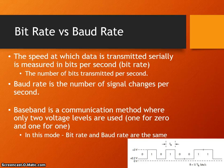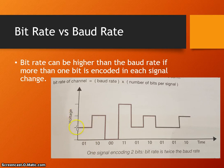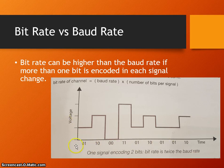There can be a situation when bit rate and baud rate are different. Bit rate can be higher than baud rate if more than one bit is encoded in each signal change. With more than one voltage level, multiple bits can be encoded per signal change. Notice that the bit rate is twice that of baud rate — there are two bits for every baud.